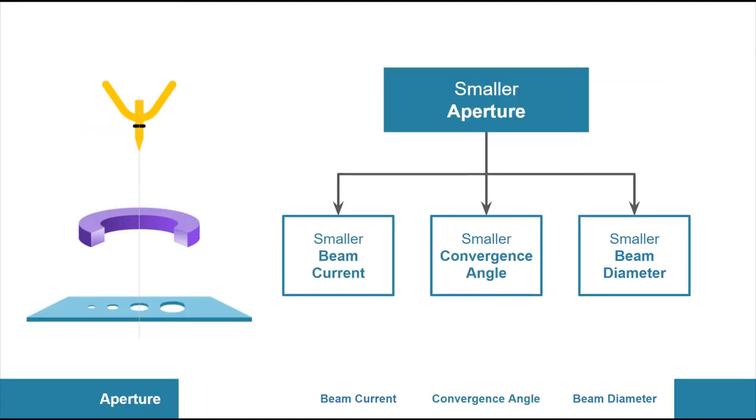The next element in the SEM is the aperture plate. This behaves as you would expect. A smaller aperture will result in a smaller beam current, a smaller convergence angle, and a smaller beam diameter.